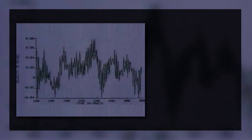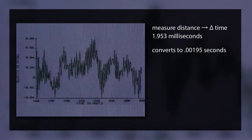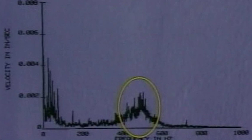If we look at the time domain, we find low-amplitude peaks that are recurring but not entirely uniform. If we measure the distance between two peaks, we find a delta time of 1.953 milliseconds, which converts to 0.00195 seconds, rounded. To convert time to frequency, take the reciprocal: 1 divided by 0.00195 equals 512.82 hertz.